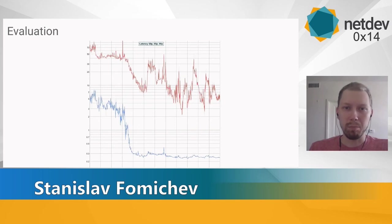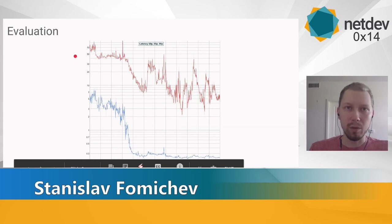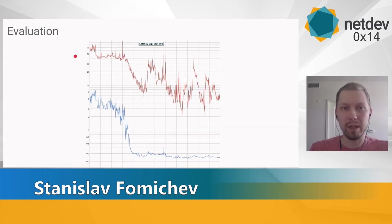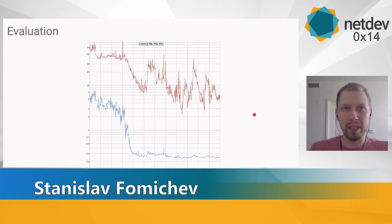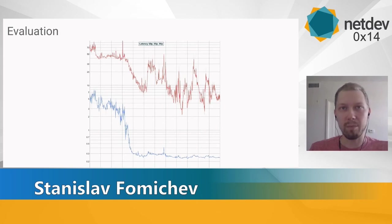Here are some performance numbers. The Y axis is latency, normalized to the range from 0 to 800, and the X axis is time. You can spot the time when we switched to the BPF rate limiter. The red line is the 99th percentile, the blue line is the 95th percentile, and the green line is the 50th percentile. There is about a 20x improvement in latency for the 99th percentile and a 10x improvement for the 95th percentile. The 50th percentile also improved about 2x, but it's hard to see on the graph.